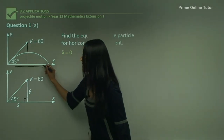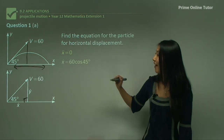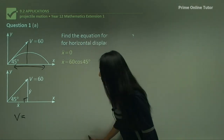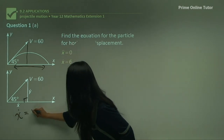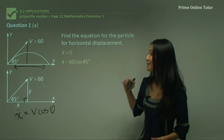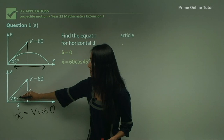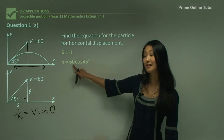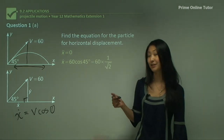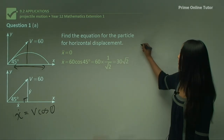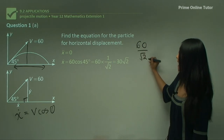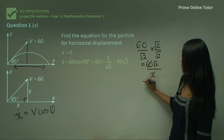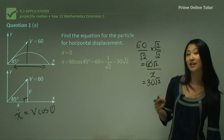Always start with acceleration, then velocity, then displacement. Horizontal acceleration equals zero — the velocity is steady. The horizontal velocity equals v·cosθ, because from the right-angled triangle cosθ equals adjacent over hypotenuse. Substituting in: 60·cos45°. We know cos45° = 1/√2, which gives 60/√2. Rationalising the denominator by multiplying by √2/√2 gives 60√2/2 = 30√2. So our horizontal velocity is 30√2.